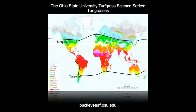Cool season turfgrasses are adapted to the temperate regions of the world. Temperate is defined as an average monthly temperature of 50 degrees Fahrenheit or 10 degrees centigrade for four to seven months of the year. The major temperate regions where cool season turfgrasses are maintained, although not exclusively, is in the northern United States and Europe.